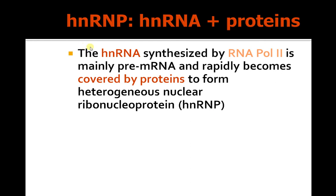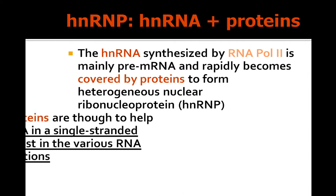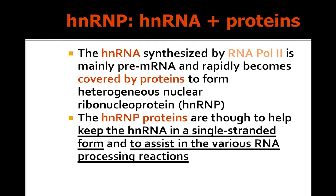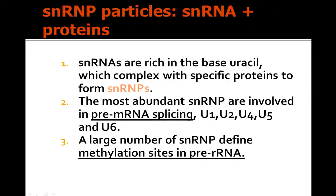HNRNA proteins: HNRNA synthesized by RNA polymerase 2 as pre-mRNA rapidly becomes covered by proteins to form heterogeneous nuclear ribonucleoproteins. These HNRNP proteins are thought to help keep HNRNA in a single-stranded form and to assist in various RNA processing reactions.